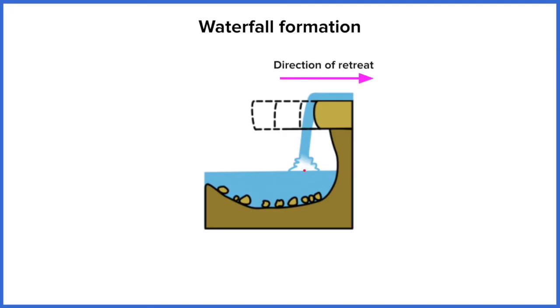This is called retreat. So the waterfall is moving backwards towards the source of the river. Over thousands and thousands of years the waterfall, at the point where the water falls, is going to move back constantly.